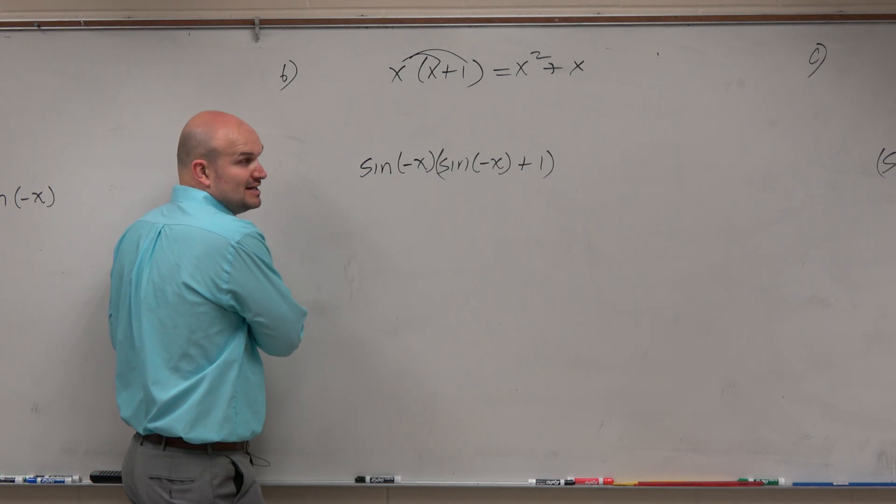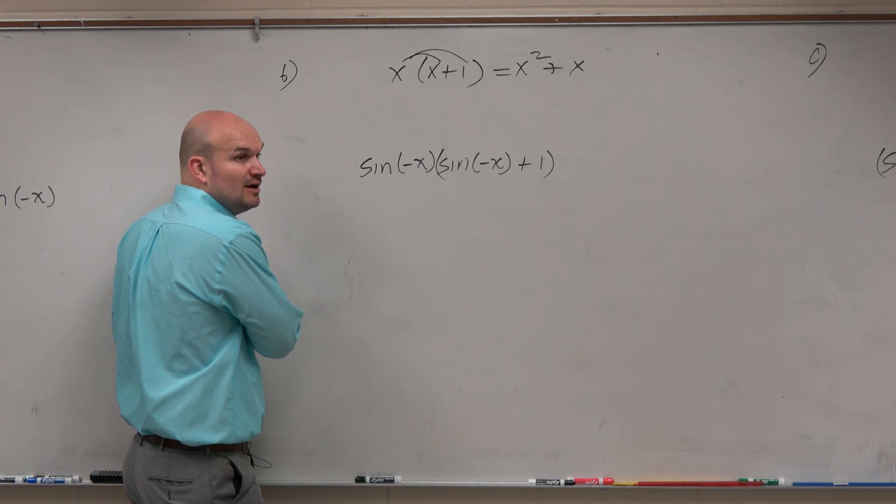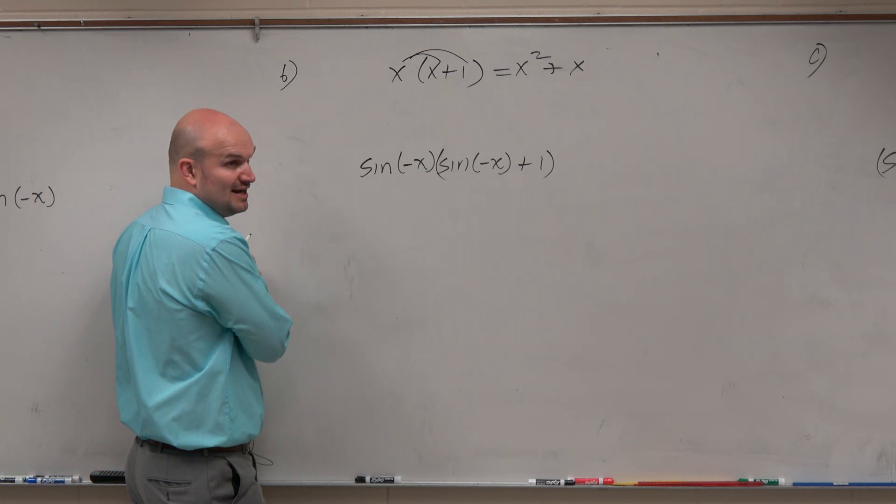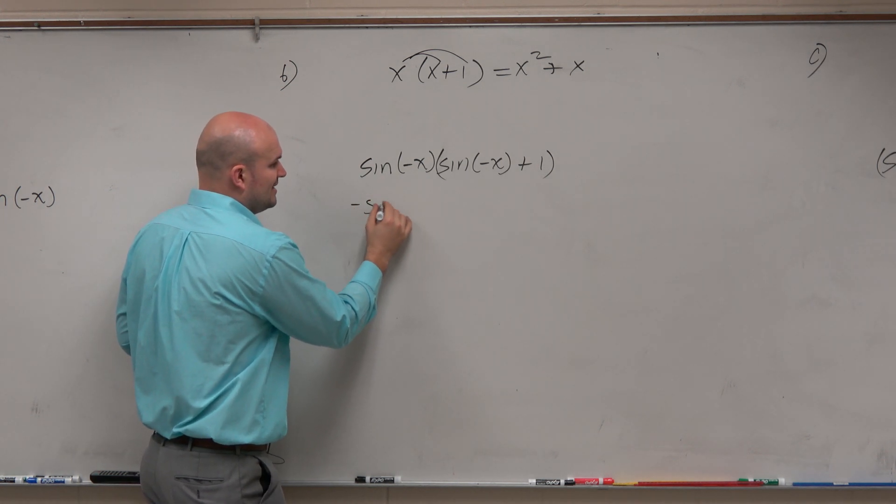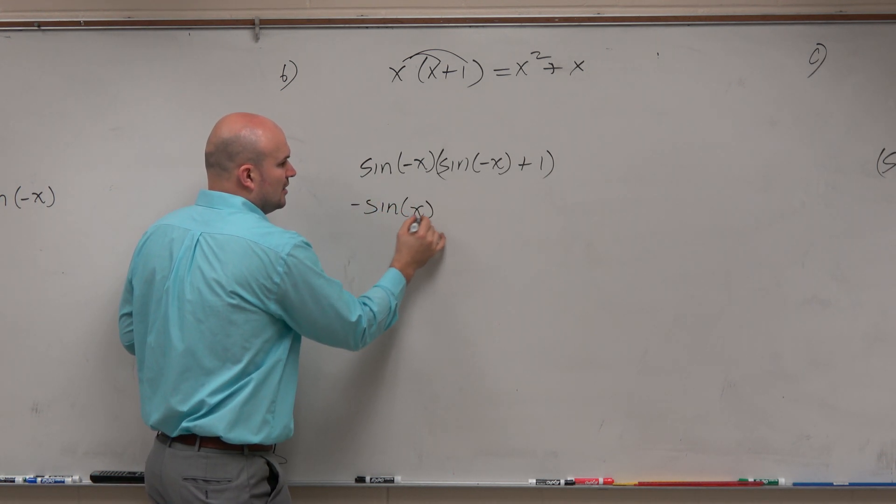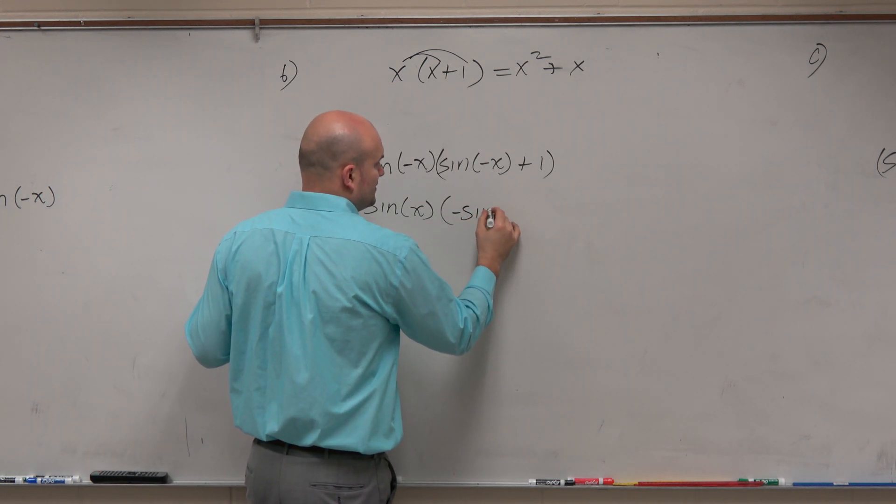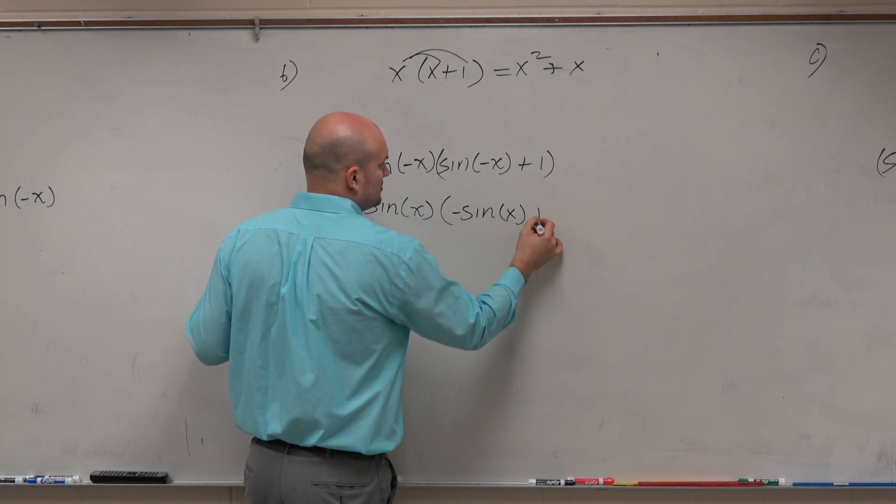Now, a couple things we can do here. Before we apply our operations, we can apply the even and odd identities. We can rewrite this as negative sine of x times negative sine of x plus 1.